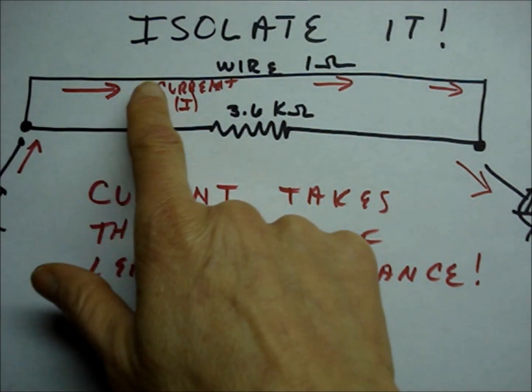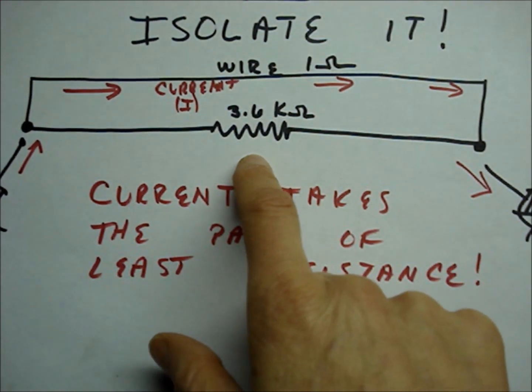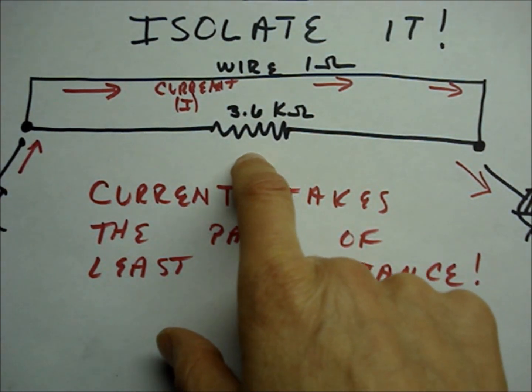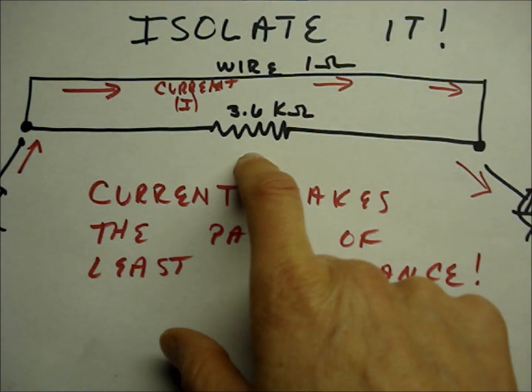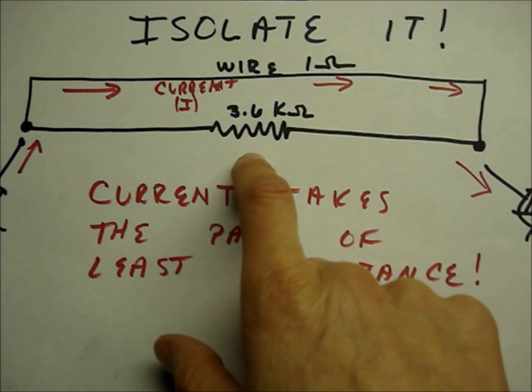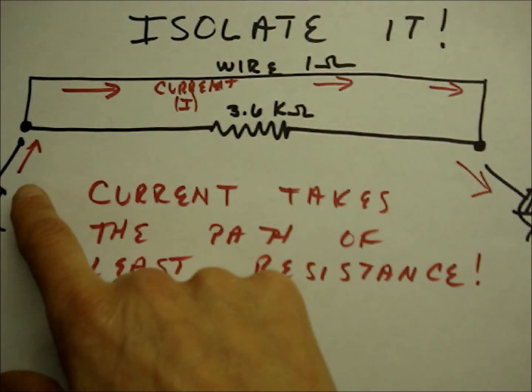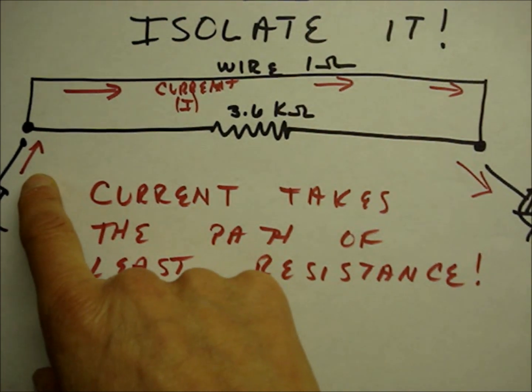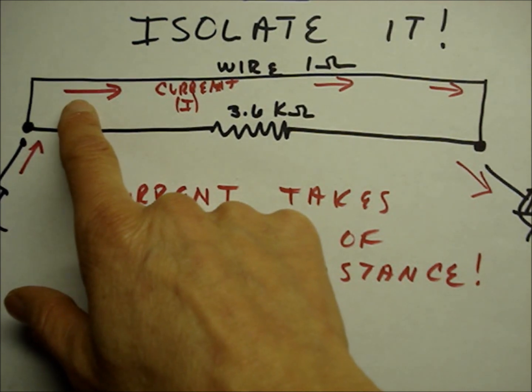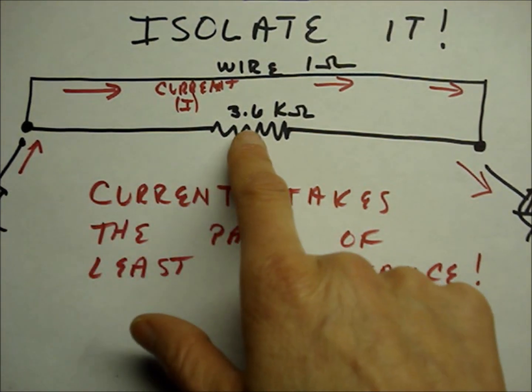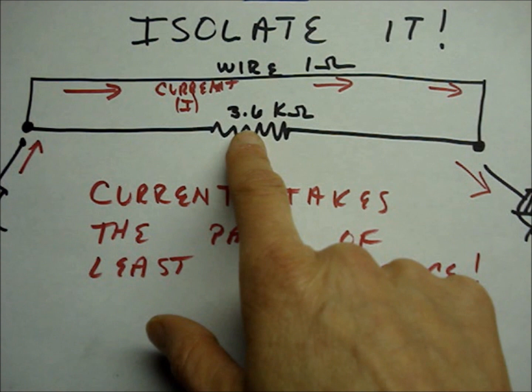If I would connect the wire and the 3.6 kohm resistor in parallel and then measure across with the multimeter, the current would take the path of least resistance. It would travel through the meter and it would bypass the larger resistance.